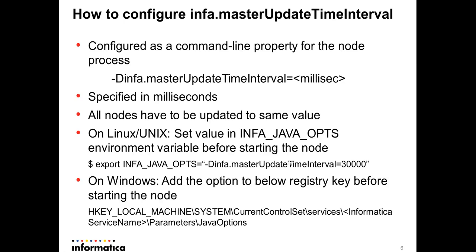On Windows, because the node runs as a Windows service, you need to update a specific registry key. The path is: HKEY_LOCAL_MACHINE\SYSTEM\CurrentControlSet\Services\<Informatica service name>\Parameters\JavaOptions — where the Informatica service name is typically something like Informatica Services followed by the version number.